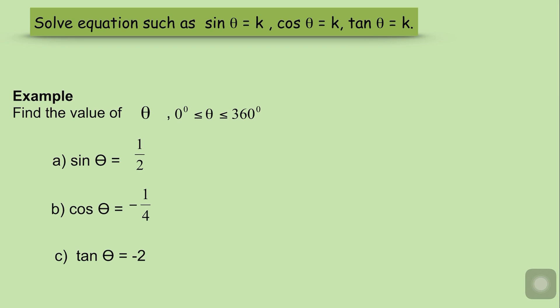Example: Find the value of θ, where θ is from 0 to 360 degrees. A: sin θ = 1/2. B: cos θ = −1/4. C: tan θ = −2.